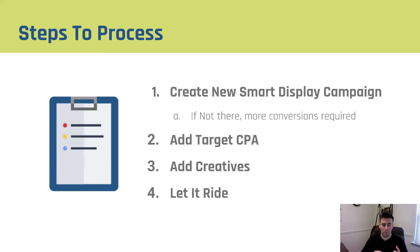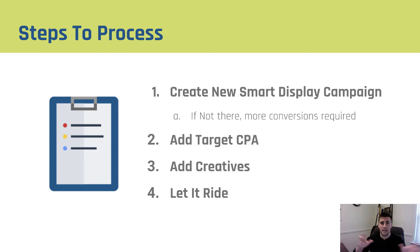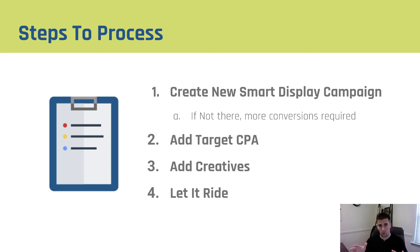The actual process of setting them up is you go into your account and set up a new display campaign — a smart display campaign. If it's not there you need to have more conversions in your account in order to use them. Google is using the conversion data that you already have to test out new things to drive more people into your business at your target CPA. If it's not there, go through and acquire more conversions and then after some time you will see this option show up in the new UI.